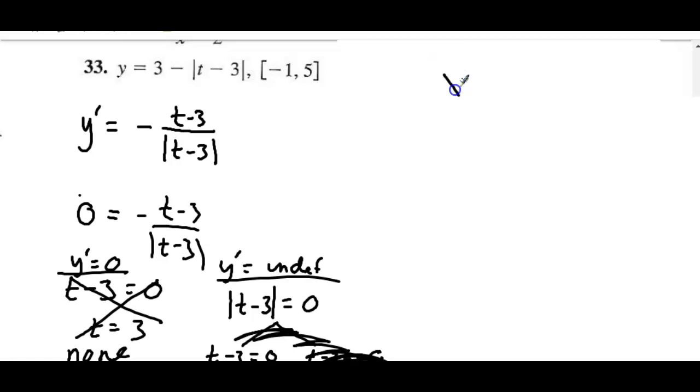All right, so we've got our candidates then. Our endpoints that we're interested in are negative 1 to 5, and we only got one candidate of a critical value, which is 3. And all you do is plug them in, and I'm pretty sure at that point, you guys will have the rest of the problem just fine. So if I plugged in negative 1, negative 1 take away 3 is negative 4. The absolute value of that would be 4. 3 take away 4 is negative 1, and so on. So I'll go ahead and finish this up. And as you can see, right there is where our minimum would be, and right there is where our max would be.